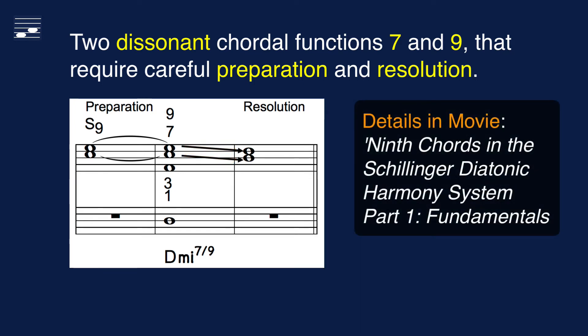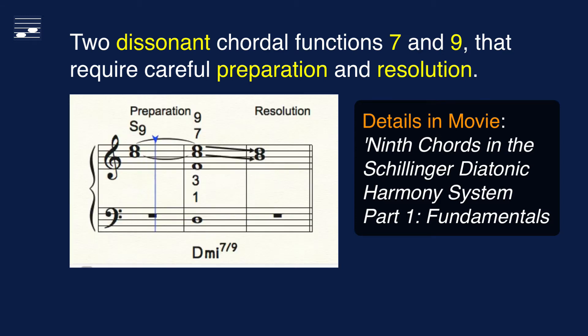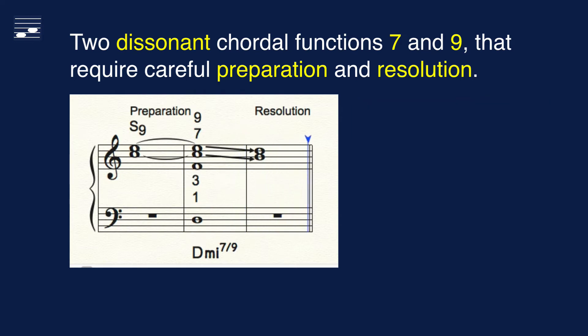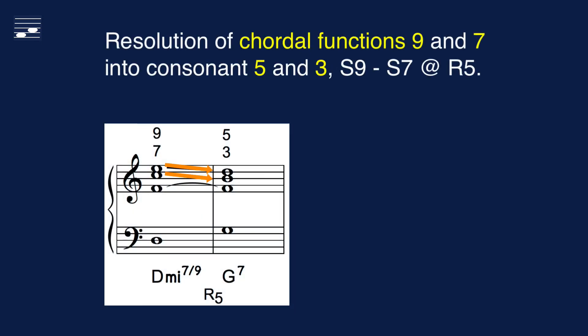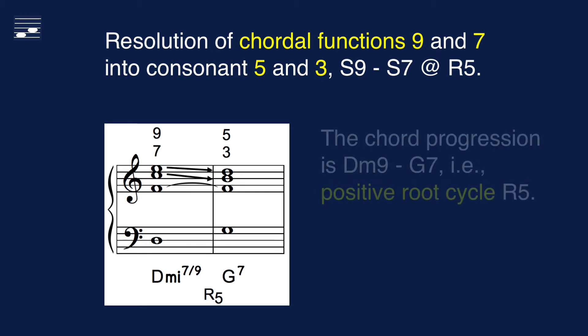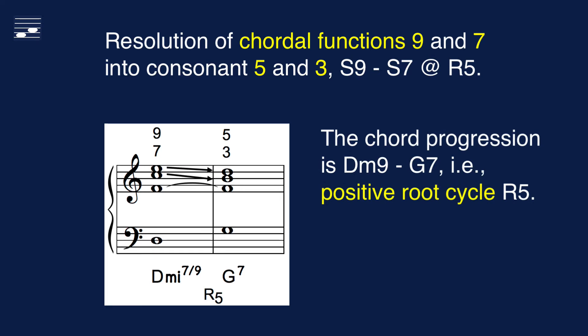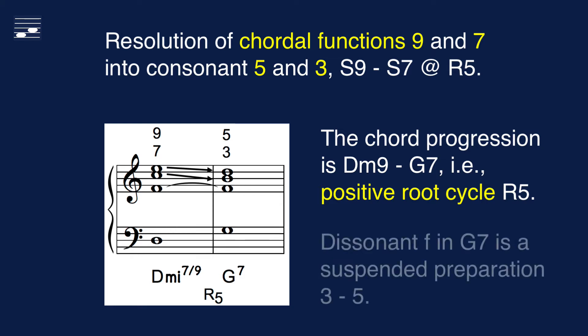This was discussed extensively in part 1 and here is how it sounds. Focusing on the resolution aspect we see the stepwise descending motion in the upper parts. These become consonant chordal functions 3 and 5 in the following chord, here a G dominant 7 chord. So the progression may be labeled as S9 to S7 through a positive diatonic root cycle R5, a descending 5th.